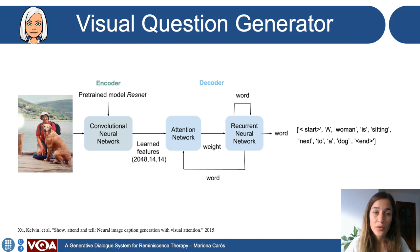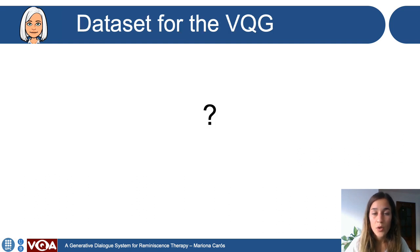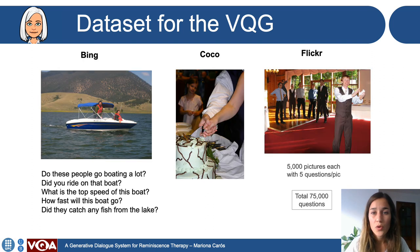The visual question generator is based on the well-known work of Show, Attend and Tell, where the model generates descriptions from pictures. It is made up of an encoder with a CNN and a decoder with attention and a recurrent neural network. In our case, we wanted the system to generate questions about the image, so we needed a dataset of reminiscence therapy dialogues. We realized there are no public datasets containing reminiscence therapy dialogues, so we used datasets which contain natural questions with the purpose of knowing more about the picture, like: do these people go voting a lot?